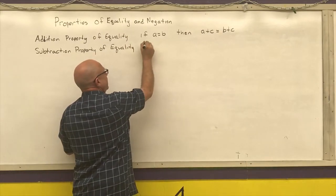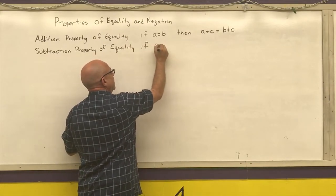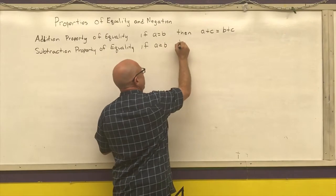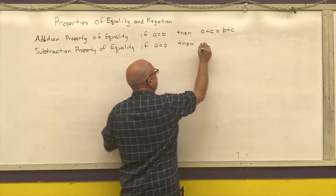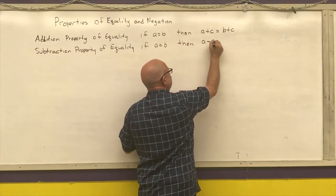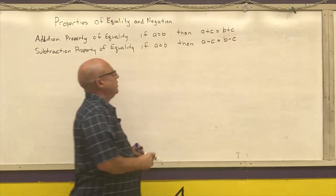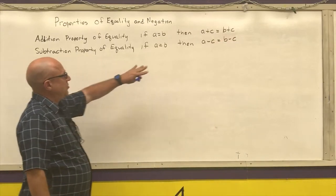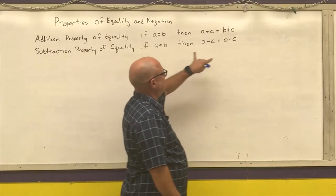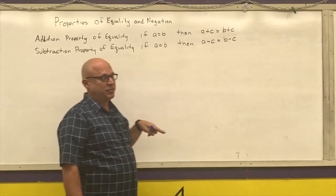Subtraction property of equality. If A is equal to B, then A minus C is equal to B minus C. That says that if I start out with two things that are equal to each other, I can subtract the same thing from both sides of an equation.